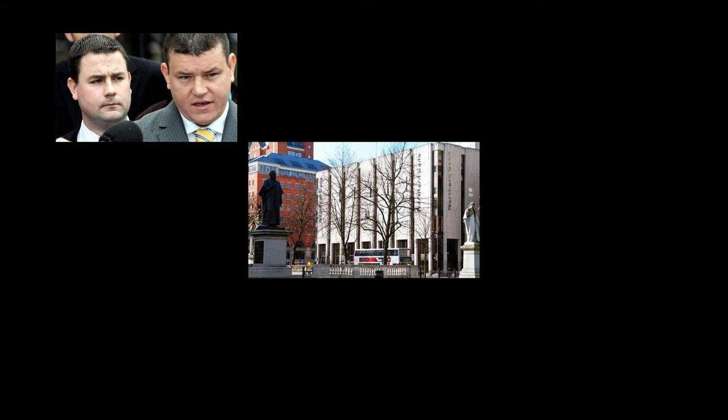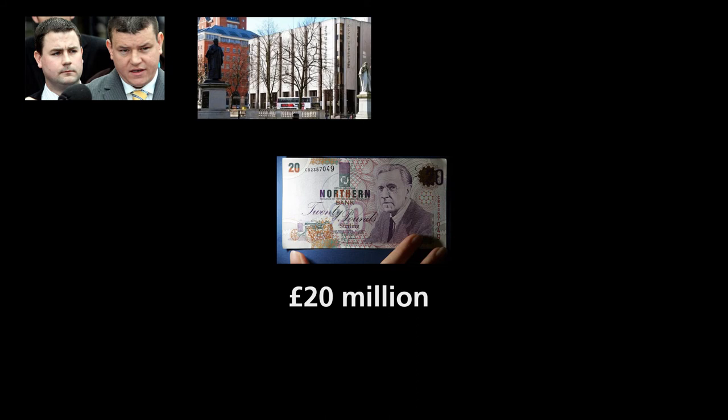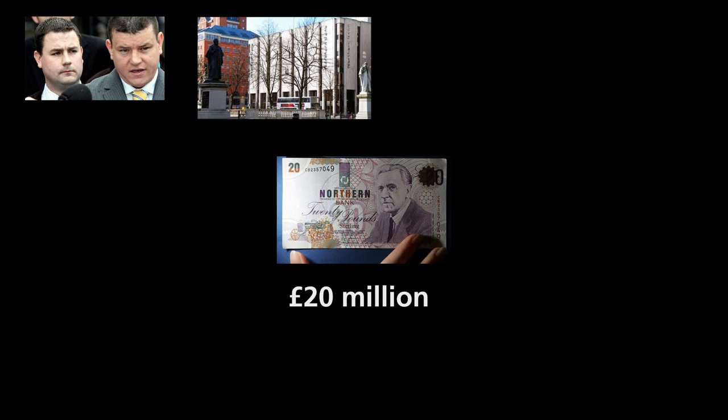The two executives were instructed to go to work as usual or risk the death of their loved ones. That night, the armed men were led into the underground vaults where they unloaded over 20 million pounds and smaller quantities of various other currencies, including US dollars and euros. It's still unclear who committed the crime, but all hostages survived the incident.